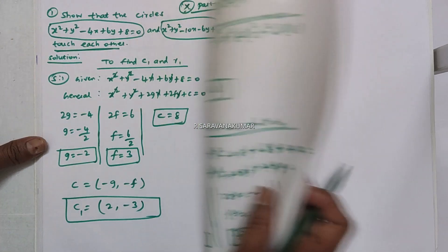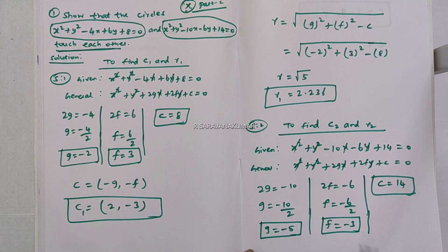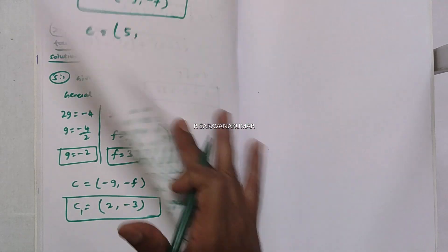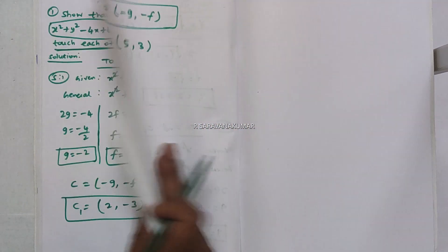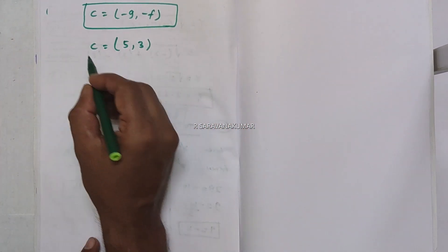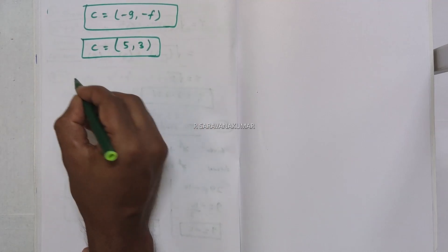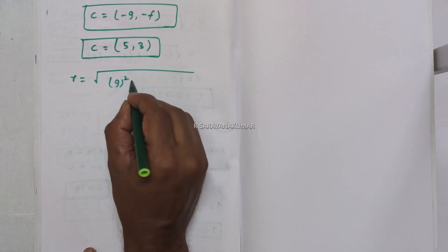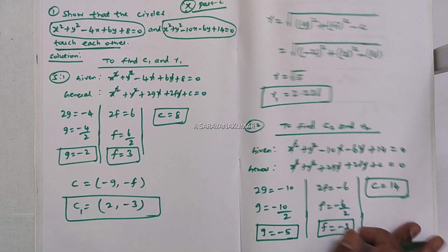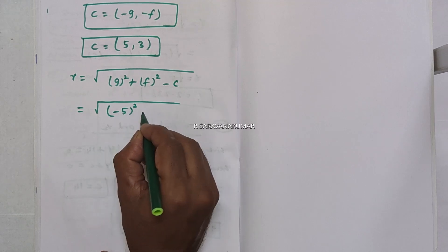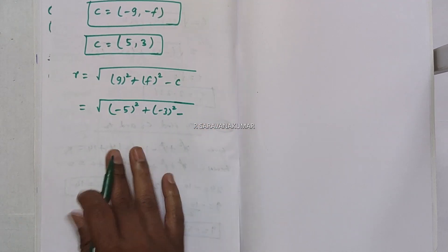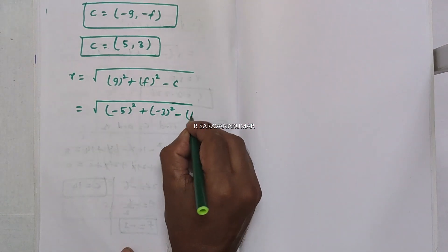The center formula is (-g, -f), so we change the sign. With g = -5 and f = -3, the center C2 = (5, 3). For the radius R2 = √(g² + f² - c) = √((-5)² + (-3)² - 14) = √(25 + 9 - 14) = √20 ≈ 4.472.